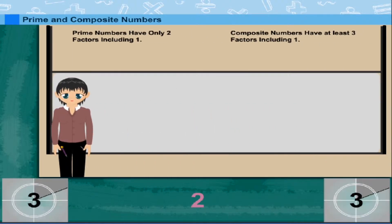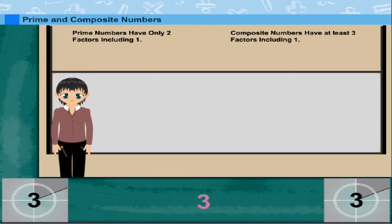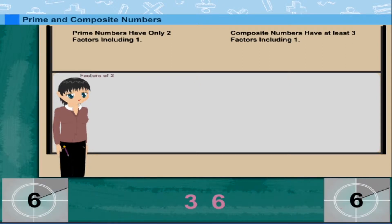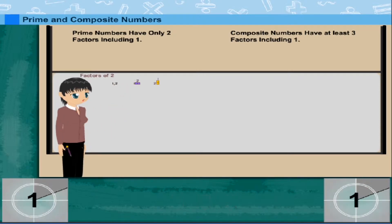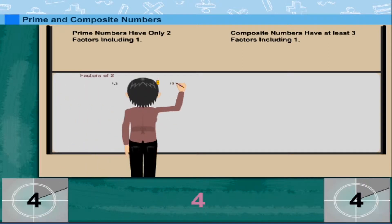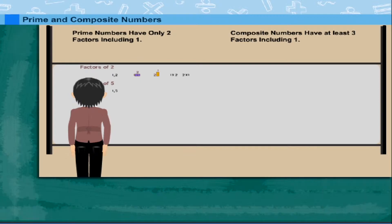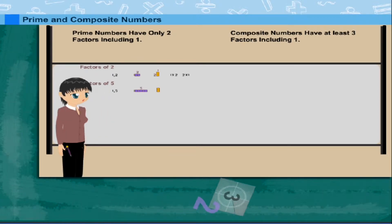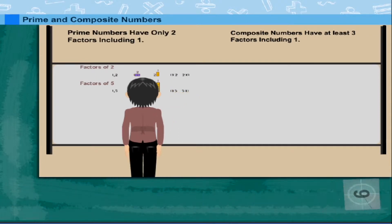Prime and Composite Numbers. TJ Nancy is writing the factors of numbers on the board. The factors of 2 are 2 and 1 — this is a prime number. The factors of 5 are 5 and 1 — this is also a prime number.